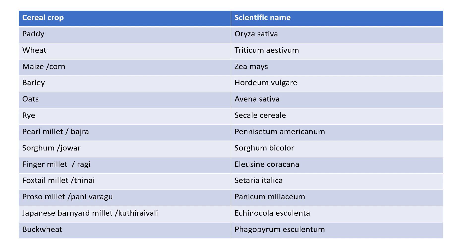Cereal crops have different scientific names. Each crop is different and species are different. The scientific name has two parts: the first part is the genus and the second part is the species. The genus starts with a capital letter and all species letters are small.